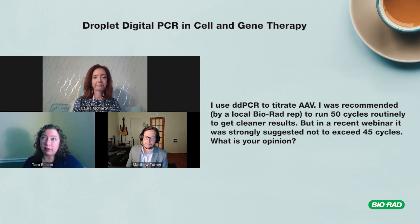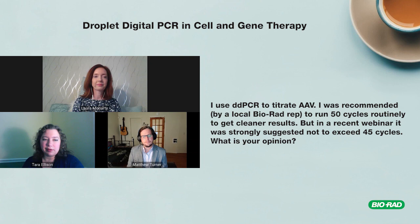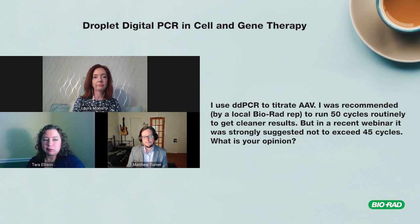Our standard recommendation is 30 cycles, and most assays work well under those conditions. There is one Bio-Rad assay — the TERT promoter assay — where we do recommend more cycles, possibly 45, because the TERT promoter is very high in GC content. Whenever you add cycles to your PCR you must be very vigilant about your negative and blank controls, as you will start to see more signal. As long as you're careful about controls, adding more cycles can be okay.